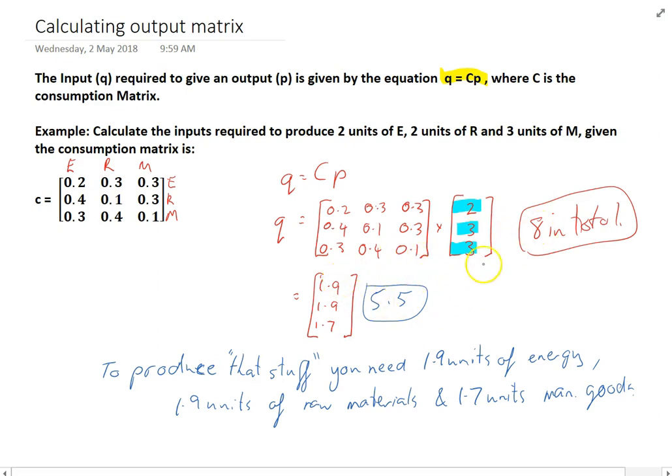So if these were equal we'd just be creating energy and raw materials and manufacturing goods but we wouldn't have any surplus. We wouldn't be able to meet the demand of some other outside economy. We wouldn't be able to export goods let's say. But given that we have a difference here of 2.5 that means that we can meet an external demand.